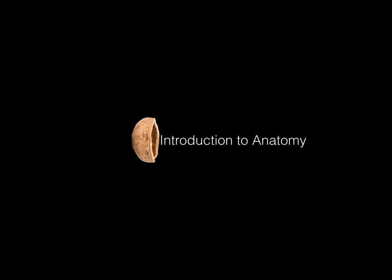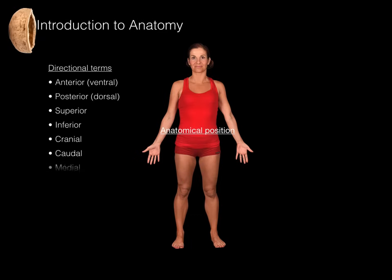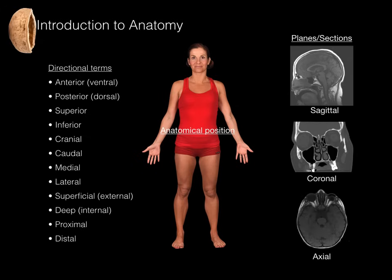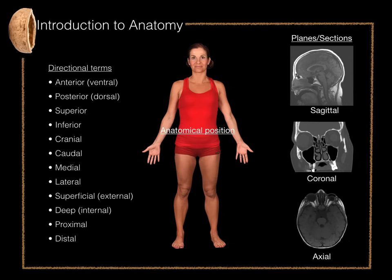This is introduction to anatomy in a nutshell. Here we have the body in anatomical position — patient facing forward, arms to the side, hands facing anteriorly with the thumbs pointing laterally. Directional terms describe any anatomical position in relation to another. The best way to view anatomy is through the following planes and sections: sagittal, coronal, and axial. And that, my friends, is an introduction to anatomy in a nutshell.